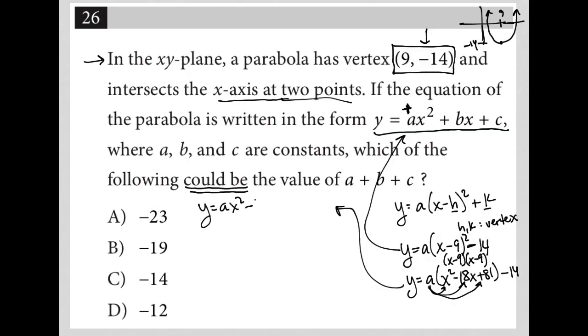Now when I'm asked to find a + b + c, I know that my a value is the same as that—a is a—but my b value is the same as -18a, and my c value is technically the same as 81a - 14. So the question asks what the sum of those three terms are, and I can find them all in terms of a. That would be a - 18a + 81a - 14.